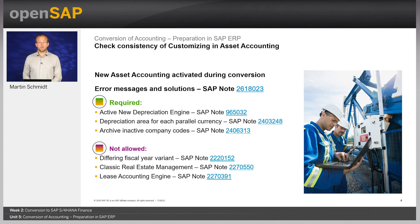Before conversion, we also recommend archiving all asset accounting relevant data of inactive company codes — meaning all company codes which in asset accounting customizing have the status 'company code deactivated, later reporting activated.' For each such company code, you need to fully archive all data. If the data are not fully archived, you will get an error during pre-checks and will not be able to continue with conversion. This archiving must be executed still in the SAP ERP system.